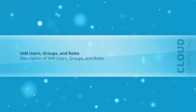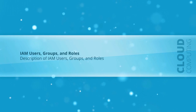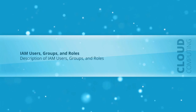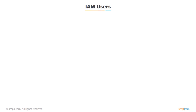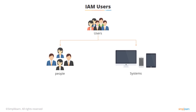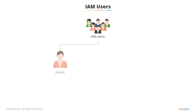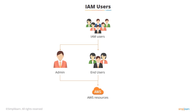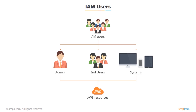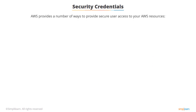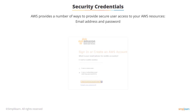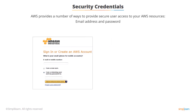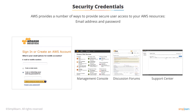Welcome to the IAM Users, Groups, and Roles section. In this section, we're going to take a look at what IAM users, groups, and roles are used for, and then we'll have a demonstration on how to create each of them in the AWS management console. Users are defined as the people or systems that use your AWS resources. They can be administrators who need to access the AWS console and manage resources, end users like developers or production support, or even systems that need permissions to access your AWS data.